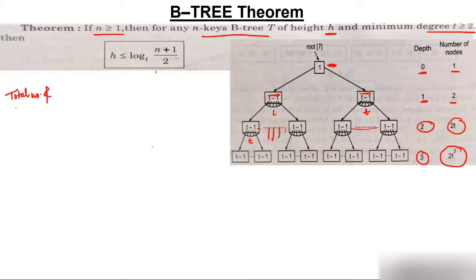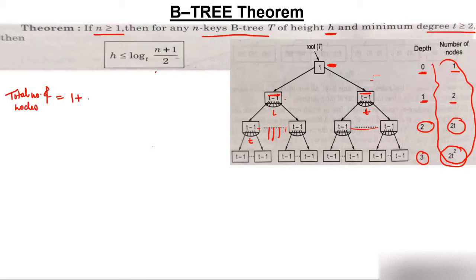Total number of nodes: at depth 0 — 1 node; depth 1 — 2 nodes; depth 2 — 2t nodes; depth 3 — 2t² nodes; and at depth h (the height) — 2t^(h−1) nodes.